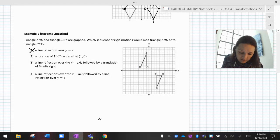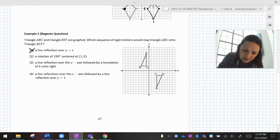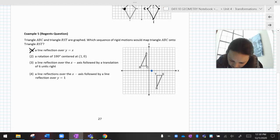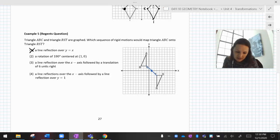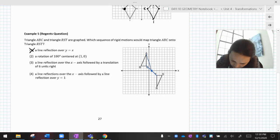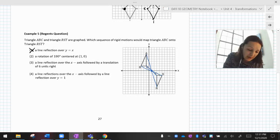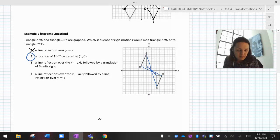All right. Two, a rotation of 180 degrees centered at (1, 0). All right. Well, let's see. (1, 0) is right here. And if I rotate 180 degrees, however I get to that point is how I leave that point. C becomes T. That's okay. Now let's try A. So we went down a bunch and then over two, down a bunch and over two. A does become R and B becomes S. I'm feeling like two is the answer. I'm going to keep going, but I feel like two is the answer.